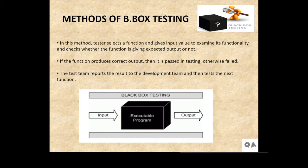In this method, we find errors in different categories. We can find interface errors, incorrect or missing functions, and behavior or performance errors. These methods help us find errors in different categories. There are set of methods or categories in which black box testing helps us, like interface errors or behavior or performance errors.